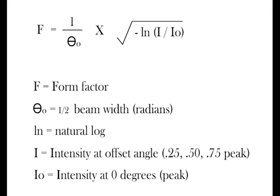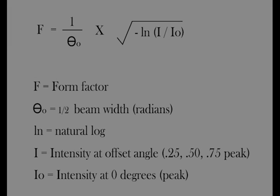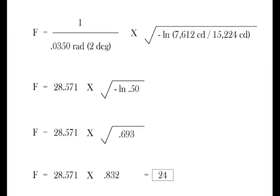In this example, it would be half of 15,224 candela or 7,612 candela. Ln is the natural log. I is the intensity of the offset angle and IO is the peak intensity. Working through the formula, this beam has a form factor of 24.